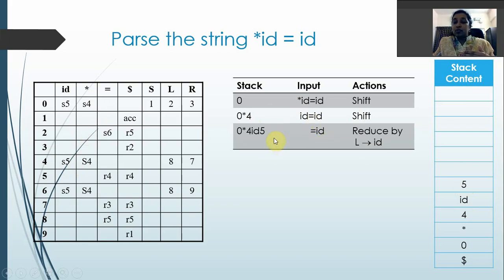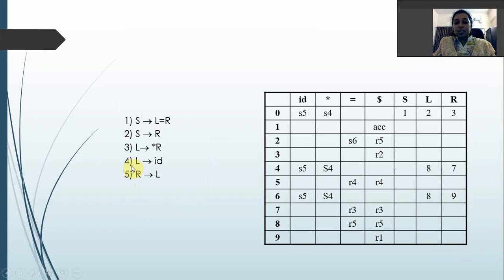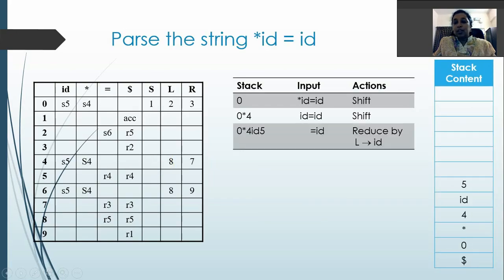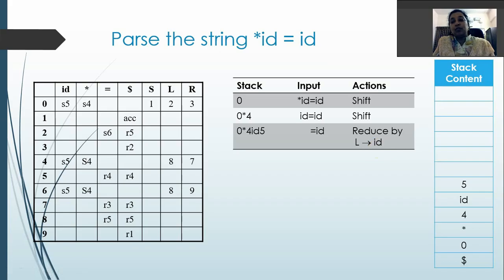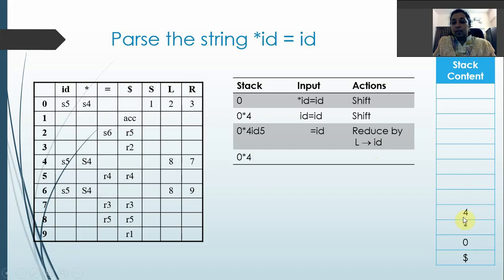Now we take the topmost element of the stack, which is 5, and the leftmost character in input, which is '='. State 5 on '=' means reduce by the 4th production. The 4th production is L → id. So we reduce by L → id. We pop twice the number of grammar symbols on the right-hand side — since id is one symbol, we pop 2 items. So 5 and id are popped from the stack, leaving state 4 on top.